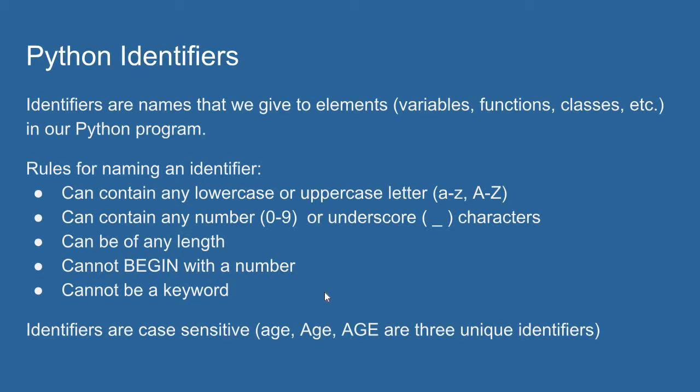Identifiers are case sensitive. So if I name something lowercase age and then I name something capital age, these are two independent identifiers.